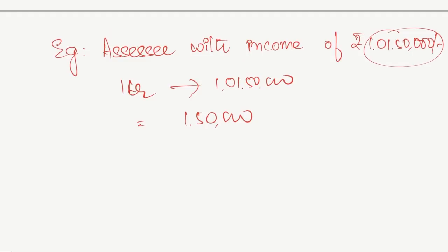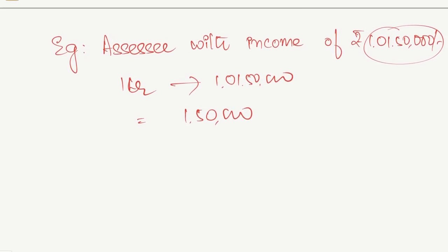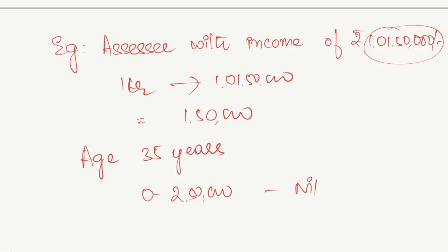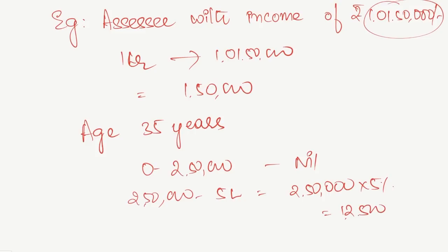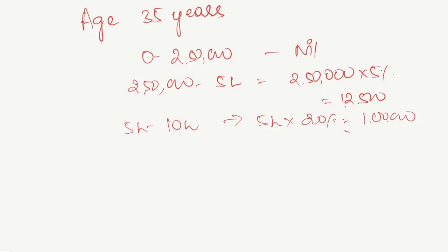First, we calculate the tax as if marginal relief is not applicable. We assume an assessee aged 35 years with income of 1 crore 1 lakh 50,000. From 0 to 2 lakh 50,000: nil tax. From 2 lakh 50,000 to 5 lakhs: 5% on 2 lakh 50,000 = 12,500. From 5 lakhs to 10 lakhs: 20% on 5 lakhs = 1 lakh. Total tax up to 10 lakhs: 1 lakh 12,500.